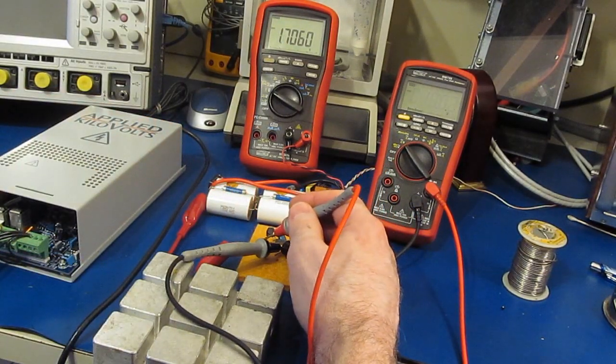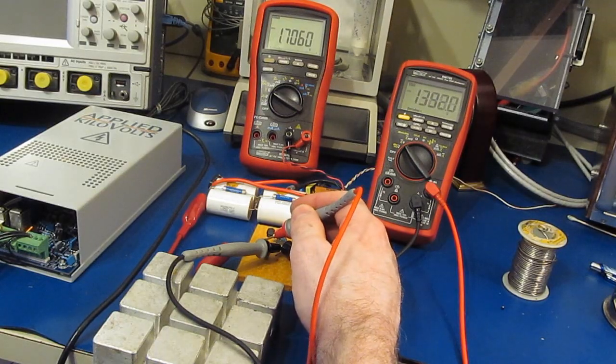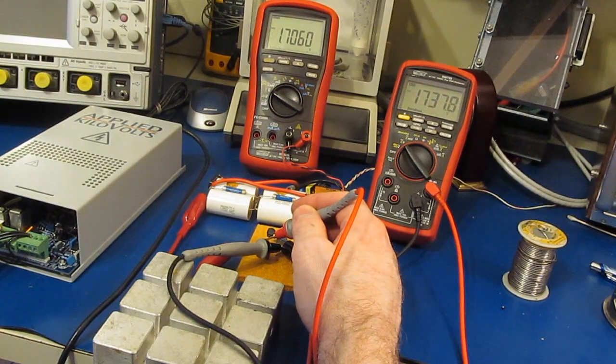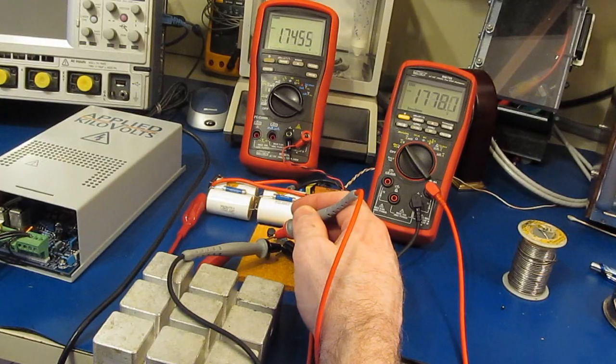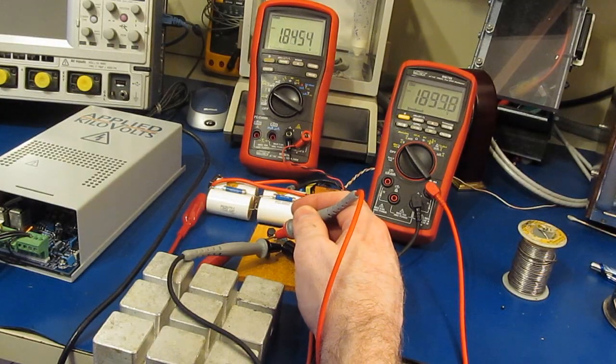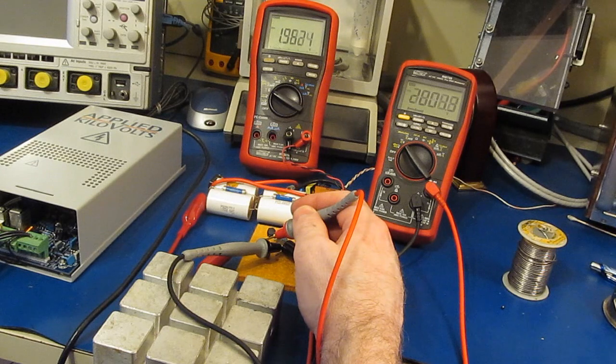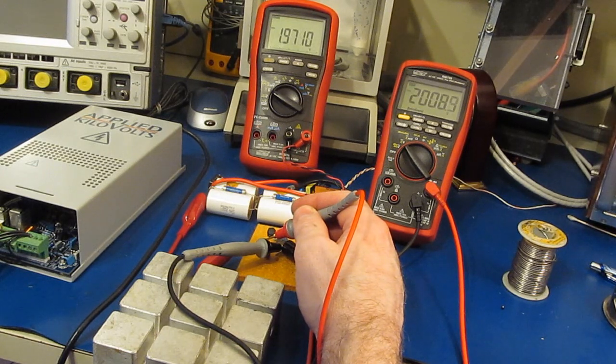Alright let's see how much is dropped across the PTC. Basically all of it you can see 1,700, 1,800. So there's 2,000 volts.